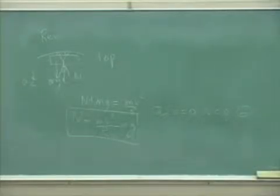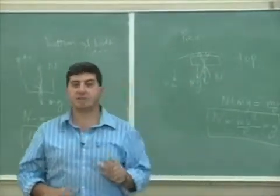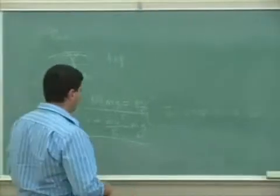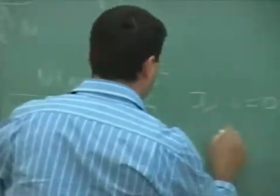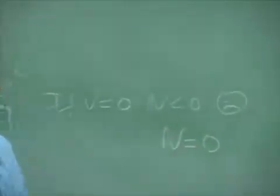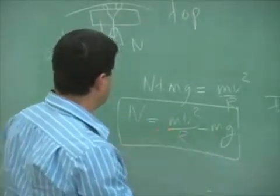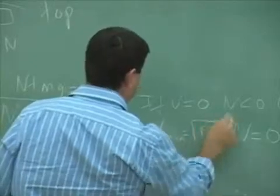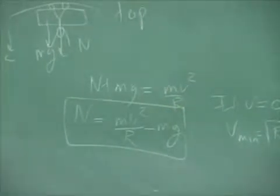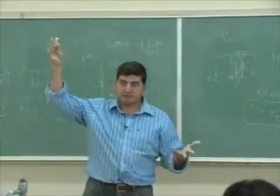Unless you have a seatbelt, you can hang on to it. Therefore, there is a minimum V. What is that minimum V at the top? The minimum V is when the normal force is zero — that means you're barely hanging on, barely in contact. So set the normal force equal to zero. When the normal force is zero, V min comes out to be — the M's cancel — square root of Rg. If V min equals square root of Rg, that's the minimum velocity you should go at so people don't feel like they're about to fall off.